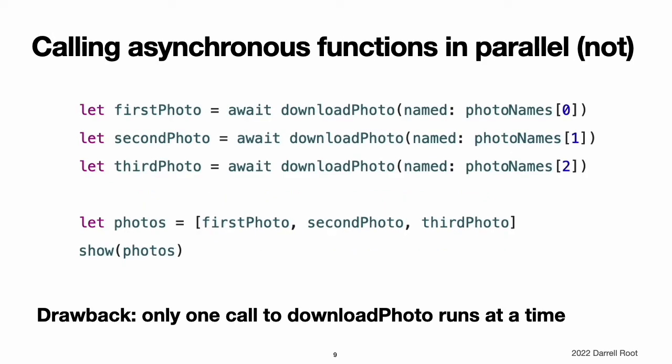Calling asynchronous functions in parallel. Calling an asynchronous function with await runs only one piece of code at a time. While the asynchronous code is running, the caller waits for that code to finish before moving on to the next line of code. For example, to fetch the first three photos from a gallery, you could await three calls to the downloadPhotoNamed function. This approach has an important drawback: although the download is asynchronous and lets other work happen while it progresses, only one call to downloadPhotoNamed runs at a time.